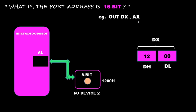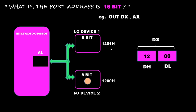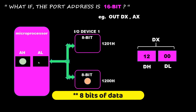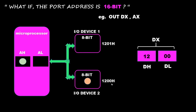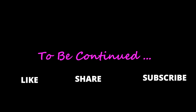If the source is AX, a 16-bit register, the data is 16 bits. A second port at address 1201h is also interfaced with the microprocessor. The first 8 bits go from AL to port 1200h (stored in DX) and the next 8 bits go from AH to port 1201h. With this, I'd like to end this video. In the next video I'll continue with the instruction set of the 8086. If you liked the video, please like, share, and subscribe. Thank you and happy learning!